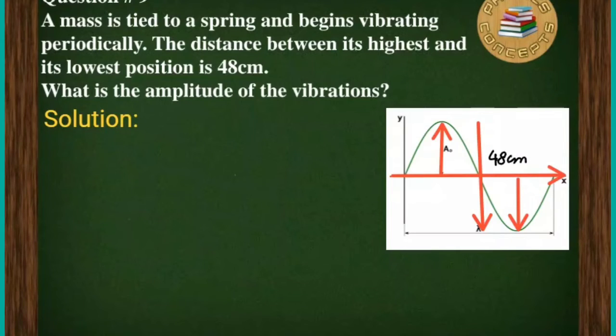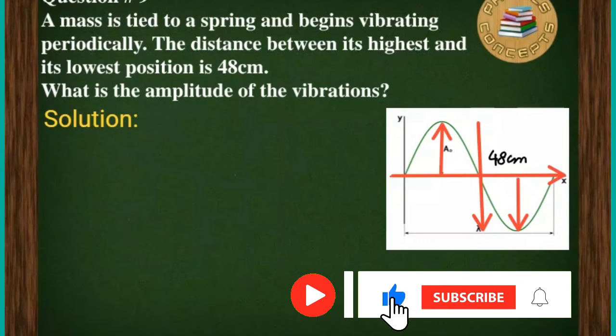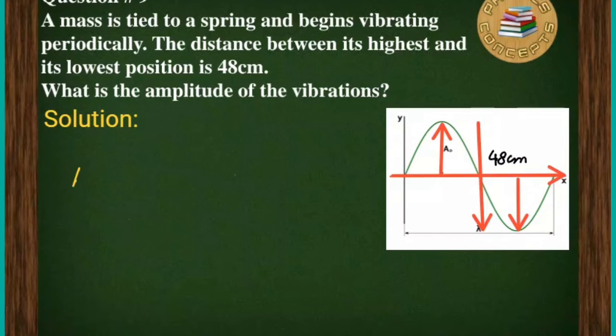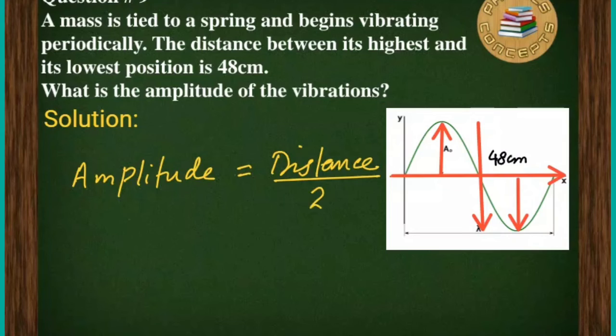So the simple way is that we will divide it by 2. So we will write that the amplitude is equal to the given distance divided by 2.